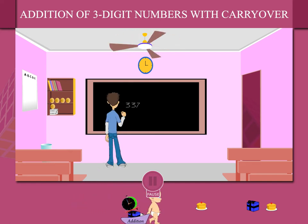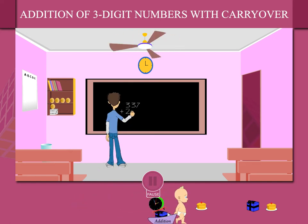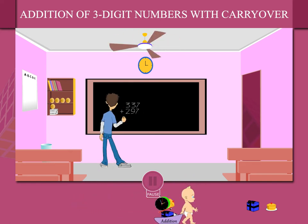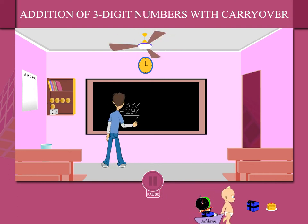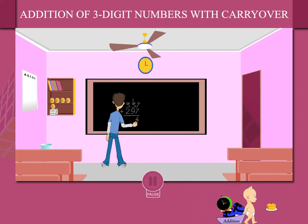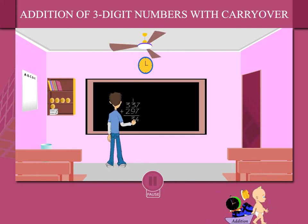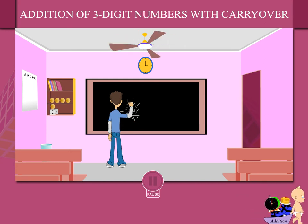He adds the ones and writes the carryover in the tens column. He then adds the tens and writes the carryover in the hundreds column.